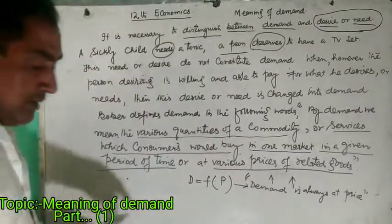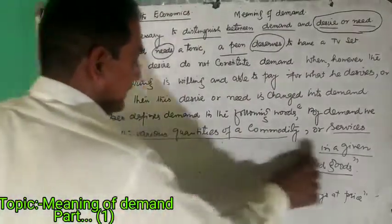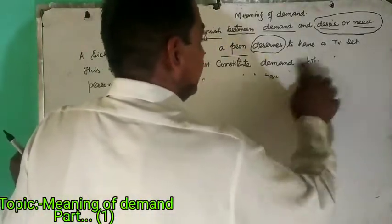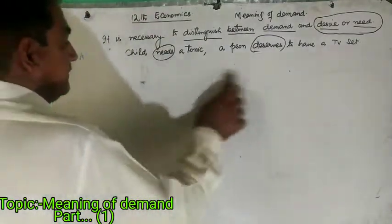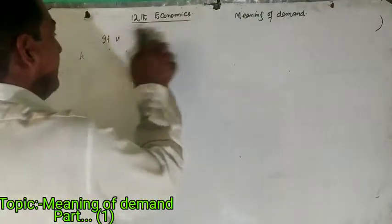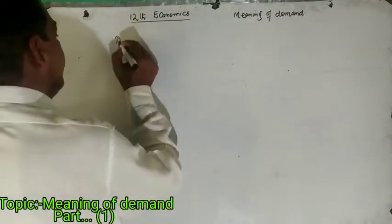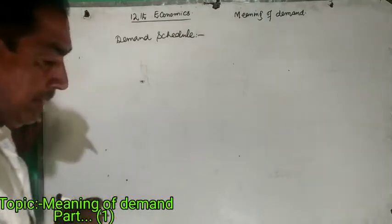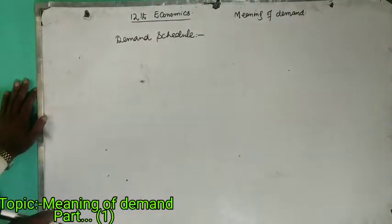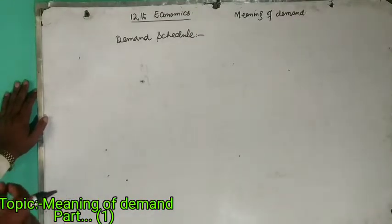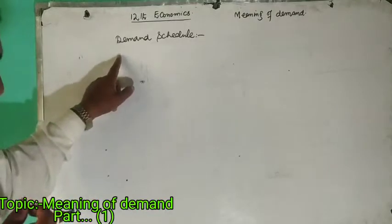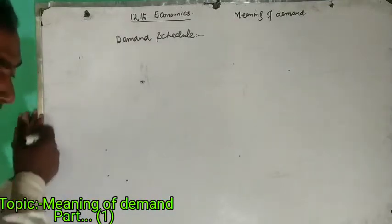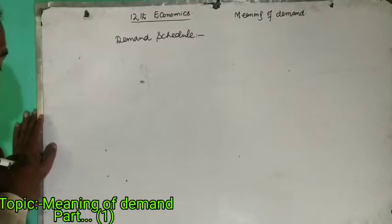We will now go to demand schedule. I will clear this so that we will have the demand schedule of the consumer — the consumers who are willing and able to pay for the price of the commodity. What is this demand schedule? Demand schedule is a table showing the relationship of different quantities of a commodity to be purchased at different prices.